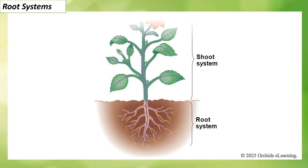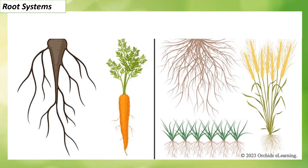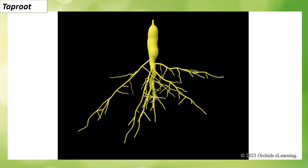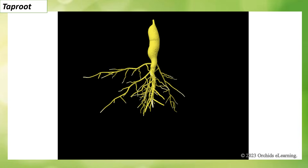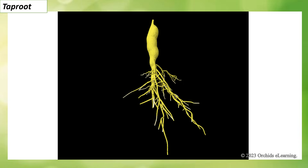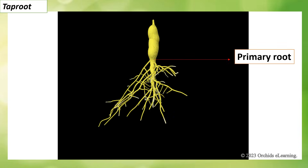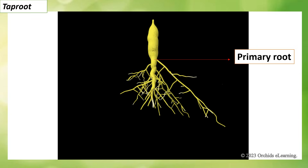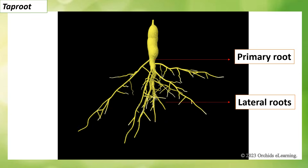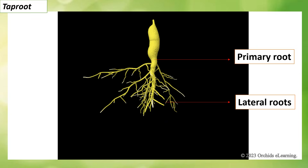The parts that remain under the ground form the root system, and the parts above the ground form the shoot system. There are two main types of root systems: tap root and fibrous root system. In the tap root system, a single root called the primary root comes out from the seed after germination.